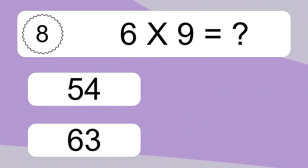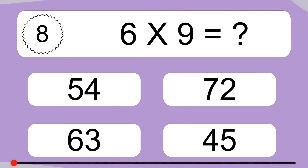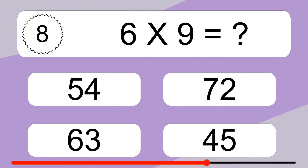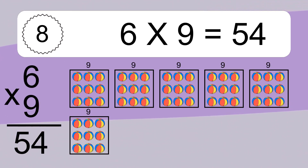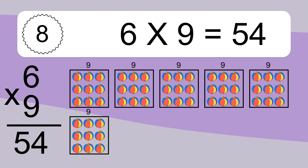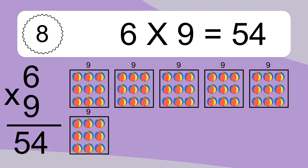6 times 9 equals what? We have 6 boxes, and each box has 9 colorful balls inside. If you count all the balls in all the boxes together, you will have 6 times 9 balls. This equals 54 balls.